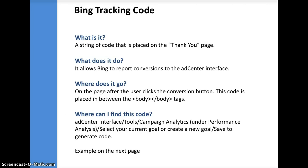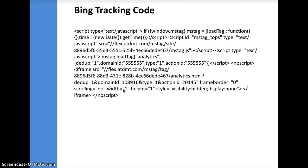The third tracking code is the Bing tracking code. This is very similar to the AdWords tracking code — it's a string of code placed on a thank you page, whether lead generation or e-commerce. What it does is it allows Bing to report conversions to the AdCenter interface, and it goes in between the body tags. This code is found in the AdCenter interface — it's a little more complicated. You select Tools, then under Tools you select Campaign Analytics, which is under Performance Analysis. You select your current goal or create a new goal, and once you press Save, it will generate the code for you. You then place that on your page and you should be able to track your conversions.